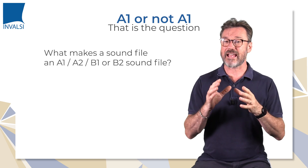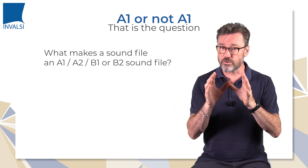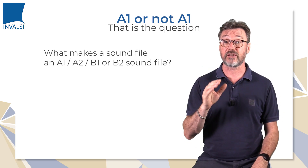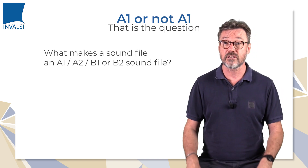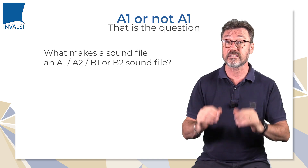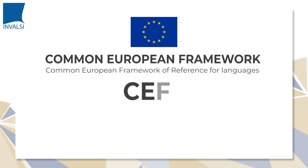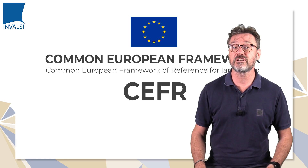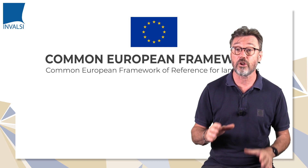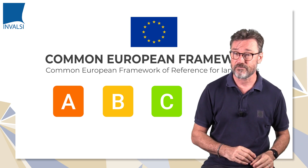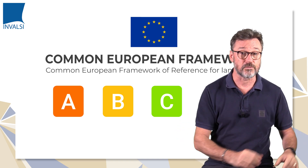So, what makes a sound file A1, A2, B1 or B2? In order to identify the features of an oral message representative of each level, it's worth referring back to the CEFR descriptors to highlight keywords which will help us select suitable sound files consistent with the target level. The Common European Framework of Reference for Languages, or CEFR, is an international standard to describe competence in a foreign language. It was developed by the Council of Europe and is structured on a progressive scale — A, B and C — further developed into sub-stages from level A1 to C2.